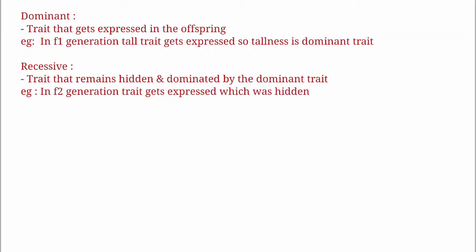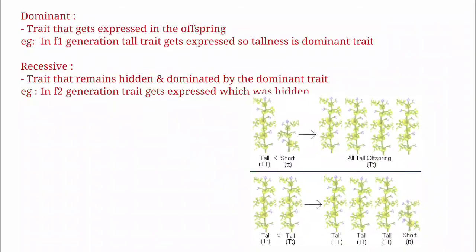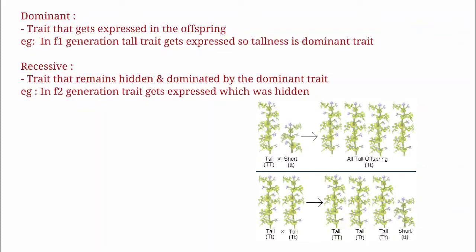The reason capital T is used for tall and small t for dwarf is because of dominant and recessive characters. The trait that gets expressed in the offspring is called the dominant character. The trait that remains hidden, dominated by the dominant trait, is called the recessive character. In the F1 generation, tallness got expressed, making it the dominant character. The denotation for dominant is always capital and for recessive always small.